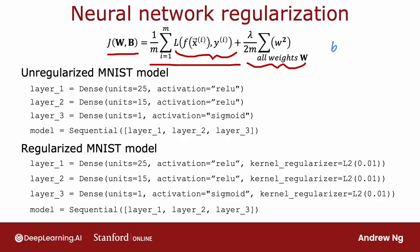And the way you would implement regularization in TensorFlow is recall that this was the code for implementing an unregularized handwritten digit classification model. We create three layers like so with number of hidden units, activation, and then create a sequential model with the three layers.